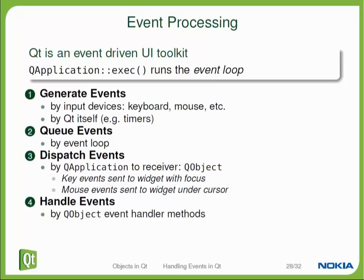The first question is where do the events come from? Events can originate from outside the program — for example, the keyboard is not owned by the application, so the operating system or windowing system will tell us that a key was pressed. There are also events created within the application; for example, a timer could go off, or the application itself could programmatically call for a UI update. These programmatic methods also lead to event creation and are added to the same event queue.